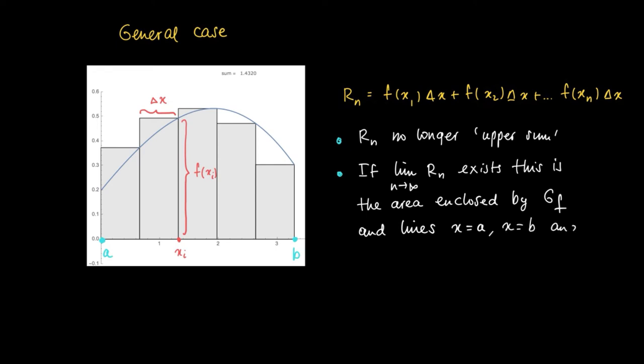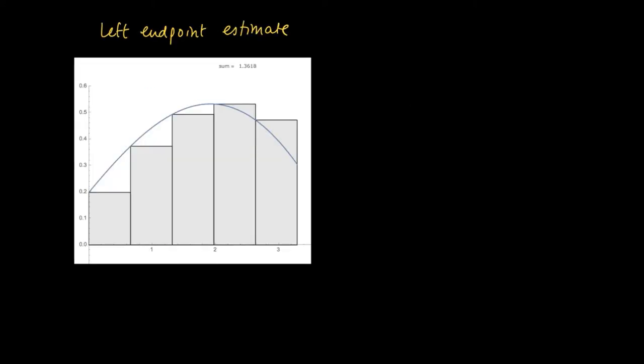There was nothing special about choosing right endpoints in order to establish an estimate for the surface area. We could well have chosen the left endpoints in each interval. So here we have again five intervals, so we subdivide our interval [a,b] in a number of equal pieces.